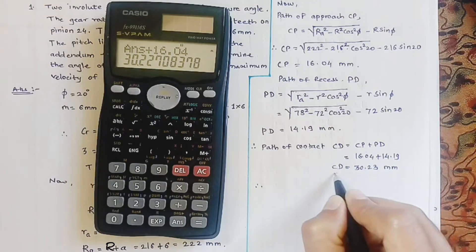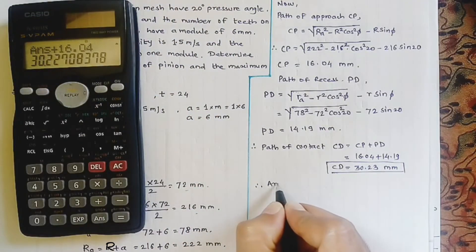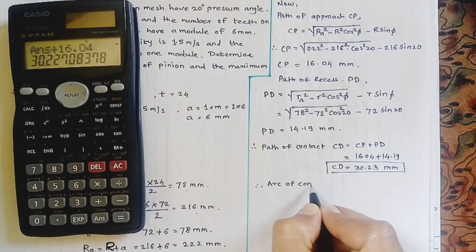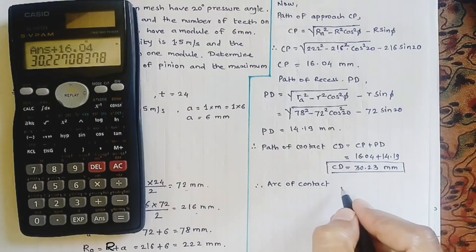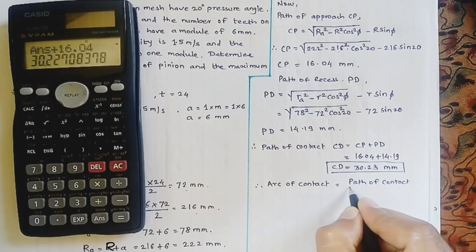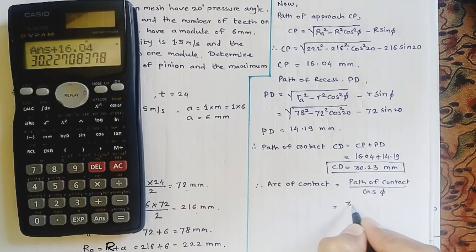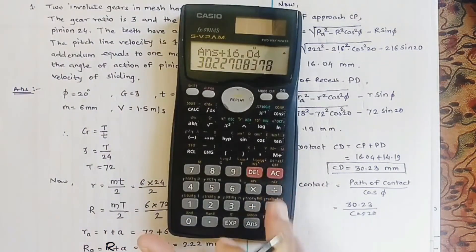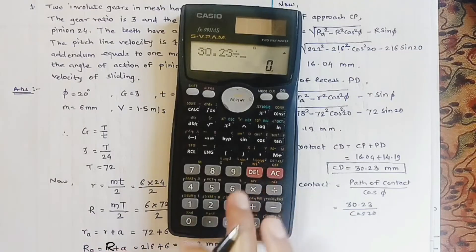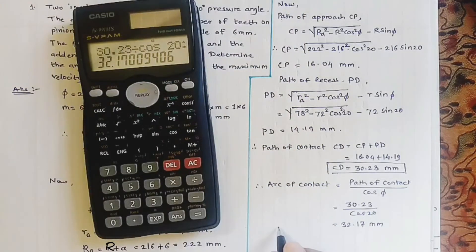Now we find the arc of contact. The arc of contact equals the path of contact divided by cosφ. So arc of contact = 30.23 / cos 20° = 32.17 mm.